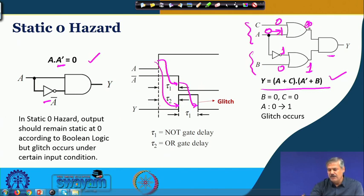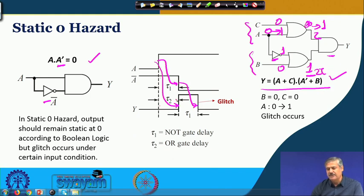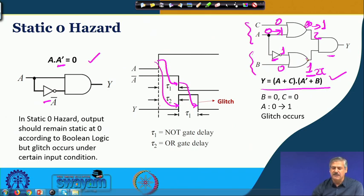The NOT gate output changes and will remain at 1 until the propagation delay passes. This output goes to 0 after two propagation delays tau-1 and tau-2. Because tau-1 and tau-2 are the same, momentarily for one propagation delay both inputs are at high, which makes the AND gate output high. This is the glitch — the positive-going pulse — that we are talking about.